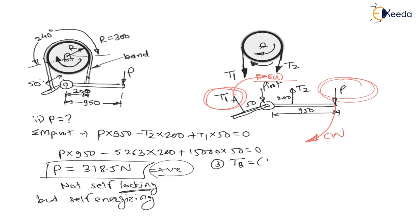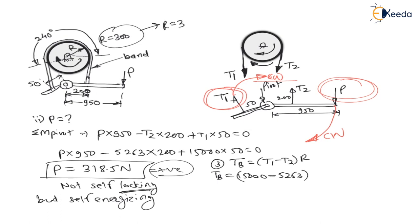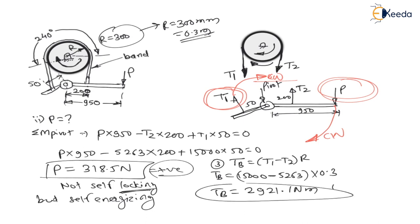The third question is to find braking torque. Braking torque equals (T1 − T2) × radius = (15,000 − 5,263) × 0.3 meters. Therefore, braking torque = 2,921.1 Newton meter. This is the braking torque and this is your answer.